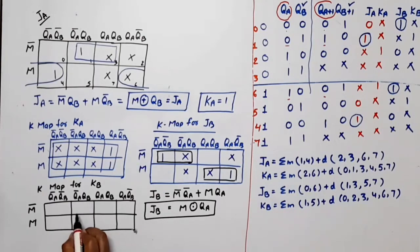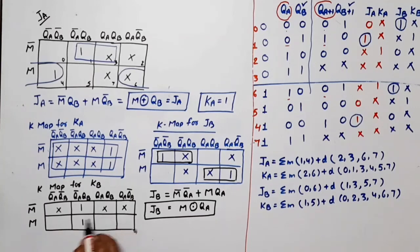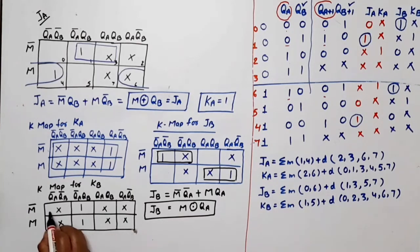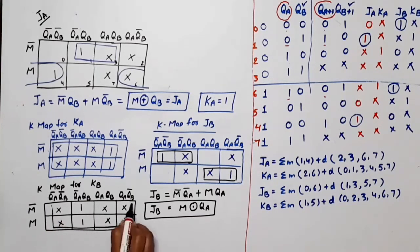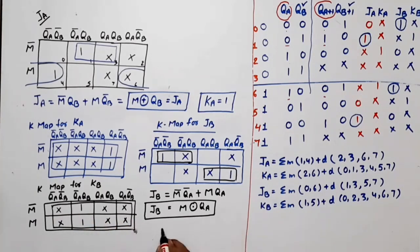For KB, the mean terms are 1 and 5, don't cares are 0, 2, 3, 4, 6, 7. An octet will be formed here, so KB is equal to 1.